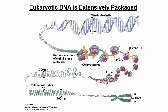When we talk about eukaryotic DNA, it's extensively packaged. Starting in its most basic form, we have a DNA double helix. When there's nothing associated with it — no histone proteins — the double helix is naked or bare. The width of a double helix is 2 nanometers. One turn of the double helix is 3.4 nanometers, and one turn is also 10 base pairs.